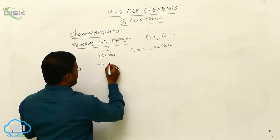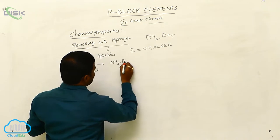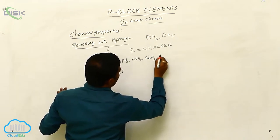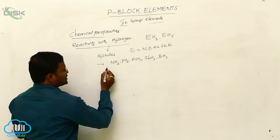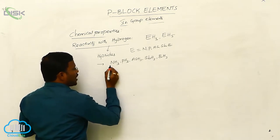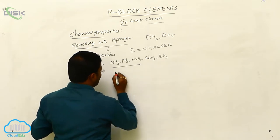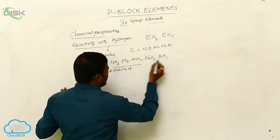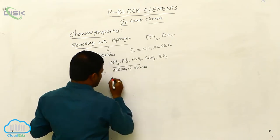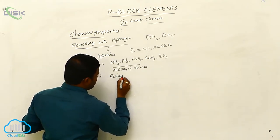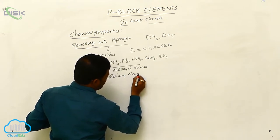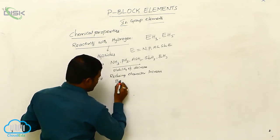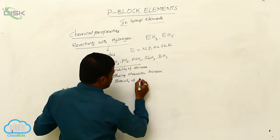These hydrides are NH3, PH3, AsH3, SbH3, and BiH3. The stability of these hydrides decreases from ammonia to bismuth trihydrate — from left to right, stability of hydrates decreases. Whereas reducing character of these hydrates increases, and basicity of these hydrates also decreases.